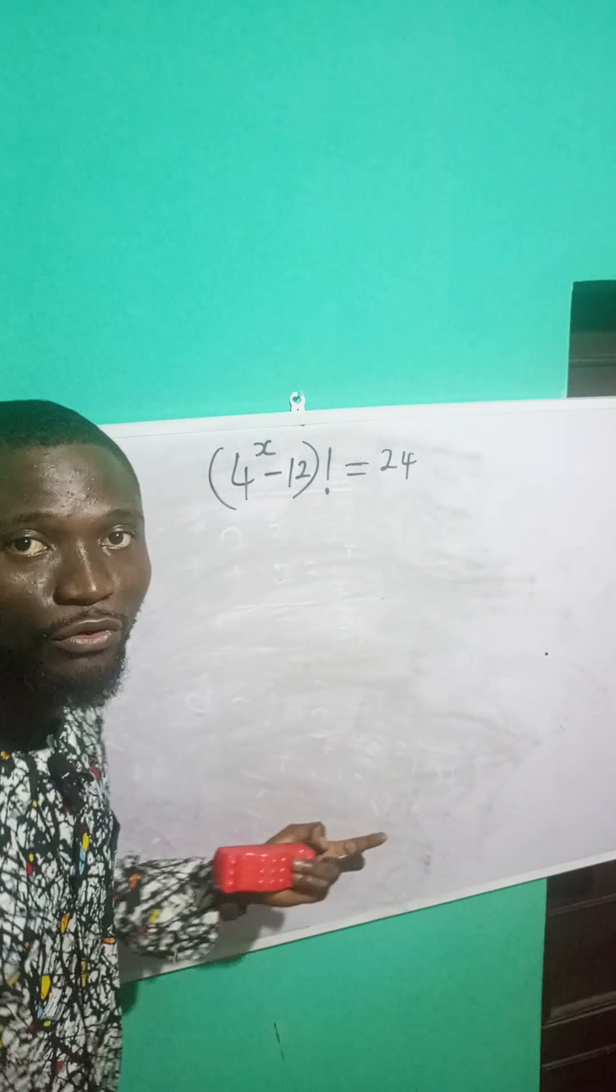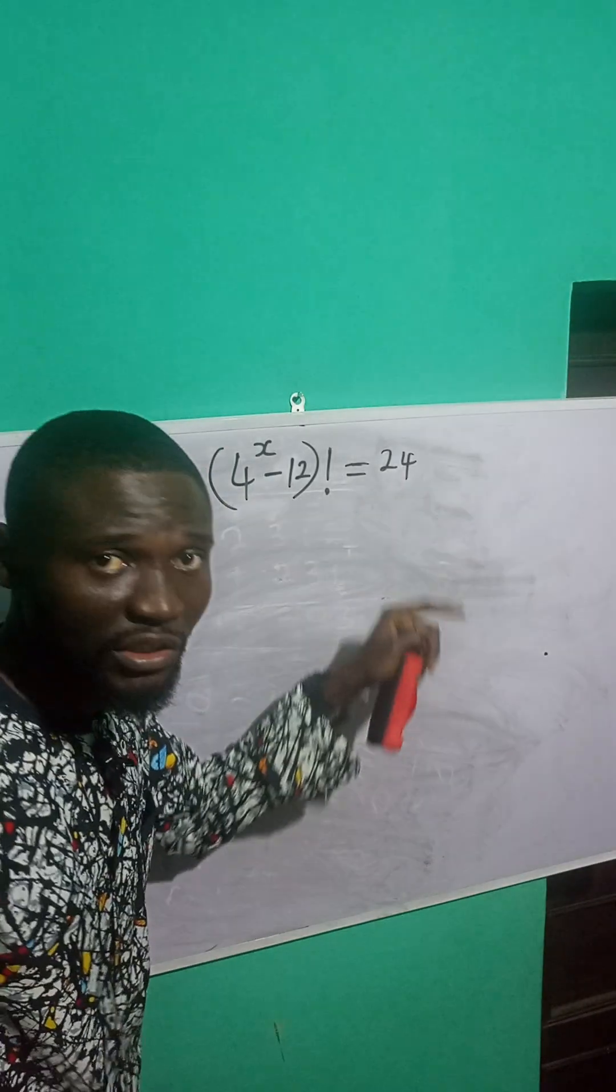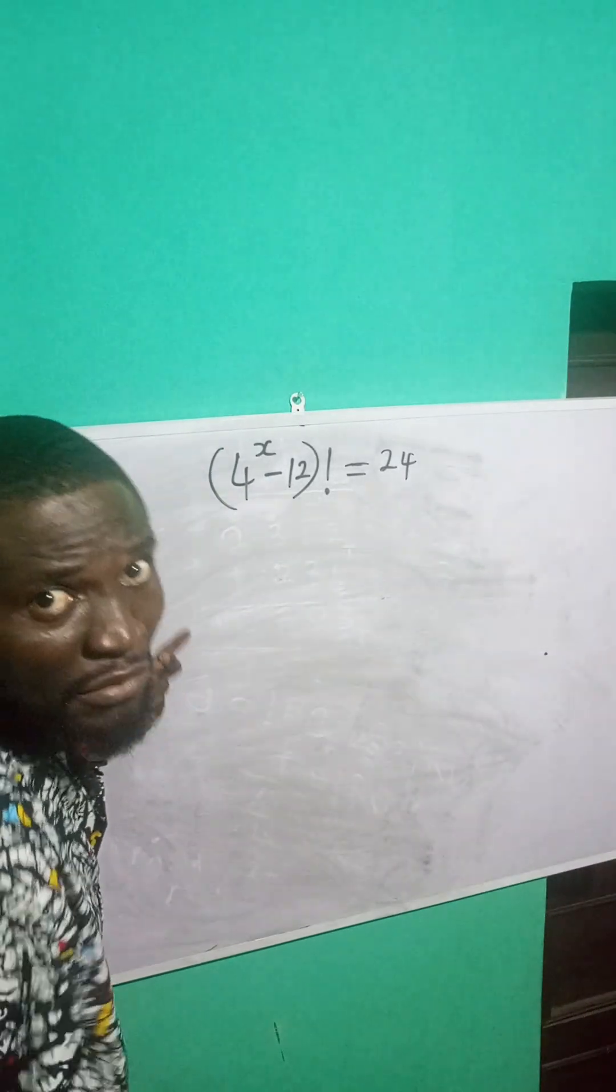Now what I'm going to do is look for the factorial of a number that will give me 24. And the factorial of a number that will give me 24 is 4. Why? Why is that? Let me prove it.